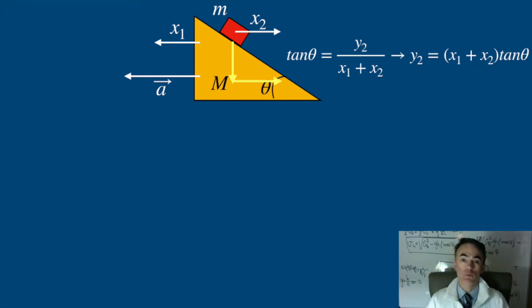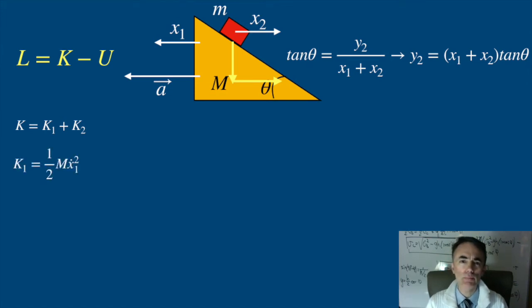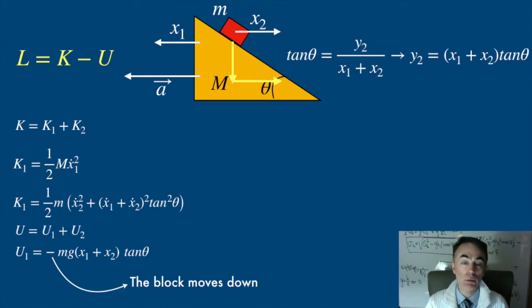With this, let's write the Lagrangian. The kinetic energy of the plane is one half of capital M times x1 dot squared. The kinetic energy of the block is one half of m times the horizontal velocity x2 dot squared plus the vertical velocity x1 dot plus x2 dot squared tangent of theta squared. The potential energy of the block is mg times x1 plus x2 tangent of theta.